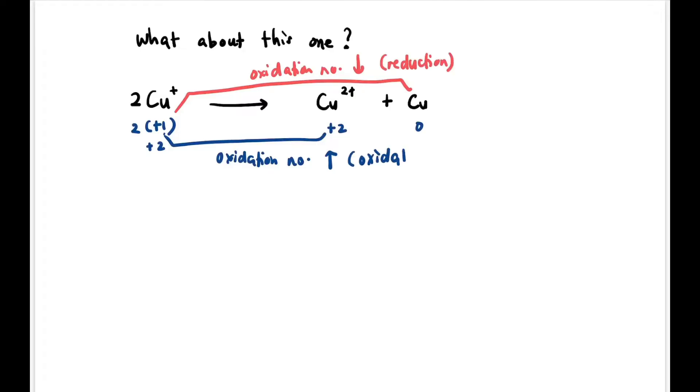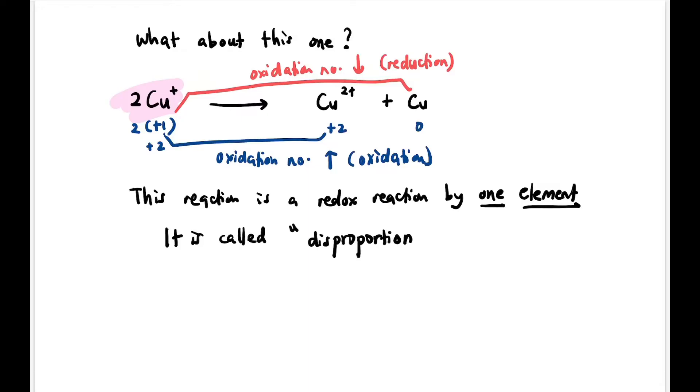So as I mentioned before, if oxidation number decreases it is reduction, if the oxidation number increases it's oxidation. So both are coming from the same element, which is Cu. So if the redox is done by one element, this reaction is a redox exactly, but it is called a special one called disproportionation.